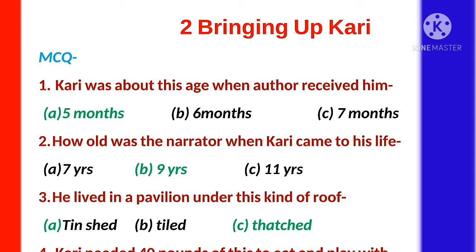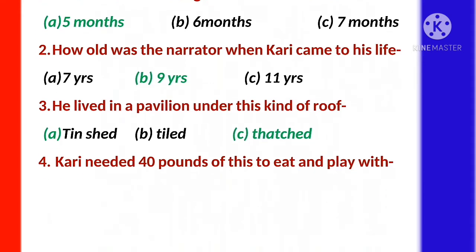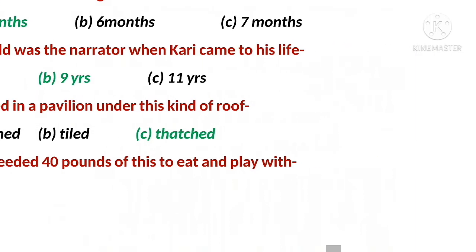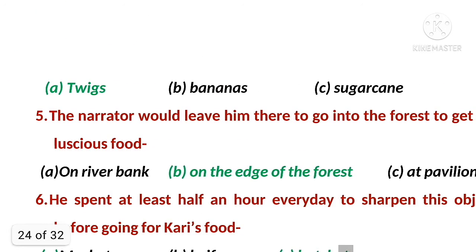Third: he lived in a pavilion under this kind of roof. The right option is D — thatched. Number four: Kari needed 40 pounds of this to eat and play with. The correct option is A — twigs.